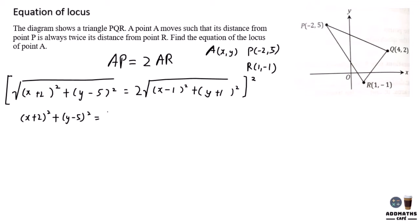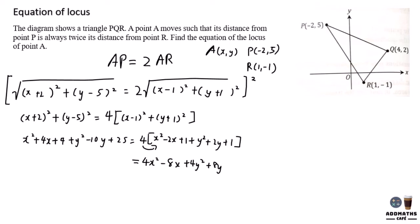Then expand the whole equation. y² - 10y + 25 equal to 4[x² - 2x + 1 + y² + 2y + 1]. Expand this by timing the 4 to all the equations. You will have 4x² - 8x plus 4y² plus 8y. 1 plus 1 is 2, 2 times 4 will give you a plus 8.